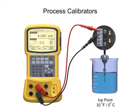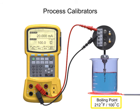To perform the measurement, the process calibrator is programmed to the specific RTD type. The accuracy is determined by measuring the temperature of water at 0 degrees Celsius and 100 degrees Celsius, representing freezing and boiling points of water. Connecting the RTD output to the calibrator, the measured temperature is displayed using the measure function.